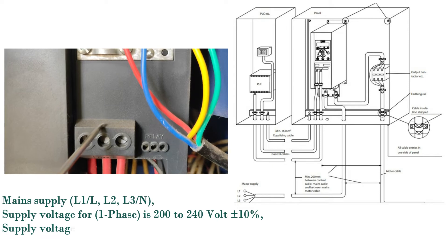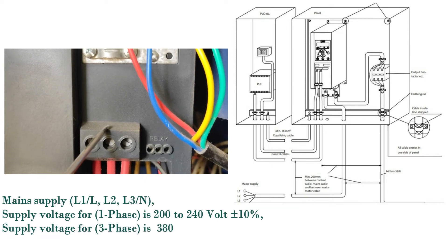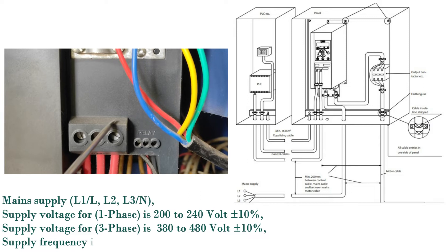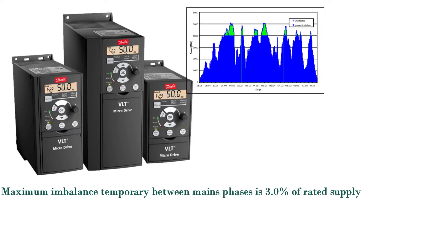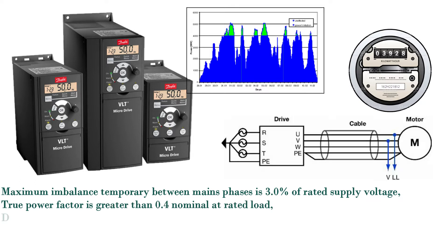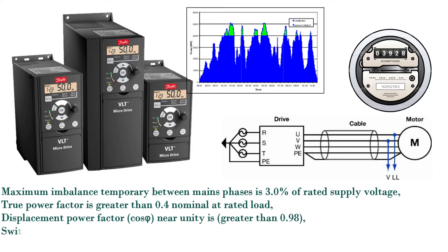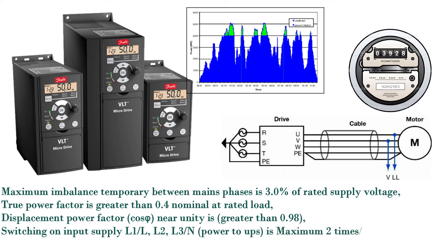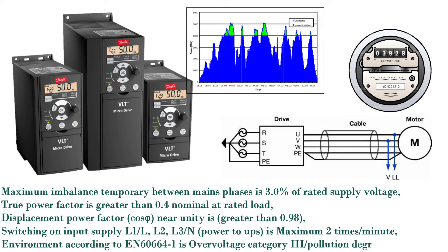Supply voltage is ±10%. Supply frequency is 50 or 60 Hz. Maximum imbalance temporary between mains phases is 3.0% of rated supply voltage. True power factor is greater than 0.4 nominal at rated load. Displacement power factor (cos φ) near unity is greater than 0.98. Switching on input supply L1-L, L2, L3-N is maximum 2 times per minute.